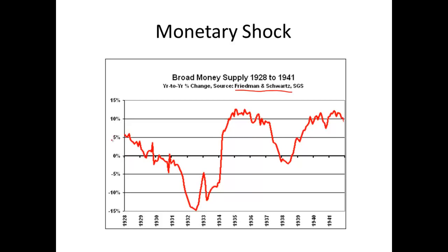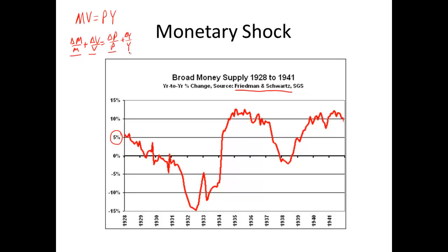Back in the late 1920s, the money supply was growing at something like 5% per year. Remember MV equals PY. Looking at the growth rate: delta M over M plus delta V over V equals inflation plus delta Y over Y. The growth in money plus the growth in velocity equals the growth in inflation plus the growth in output.